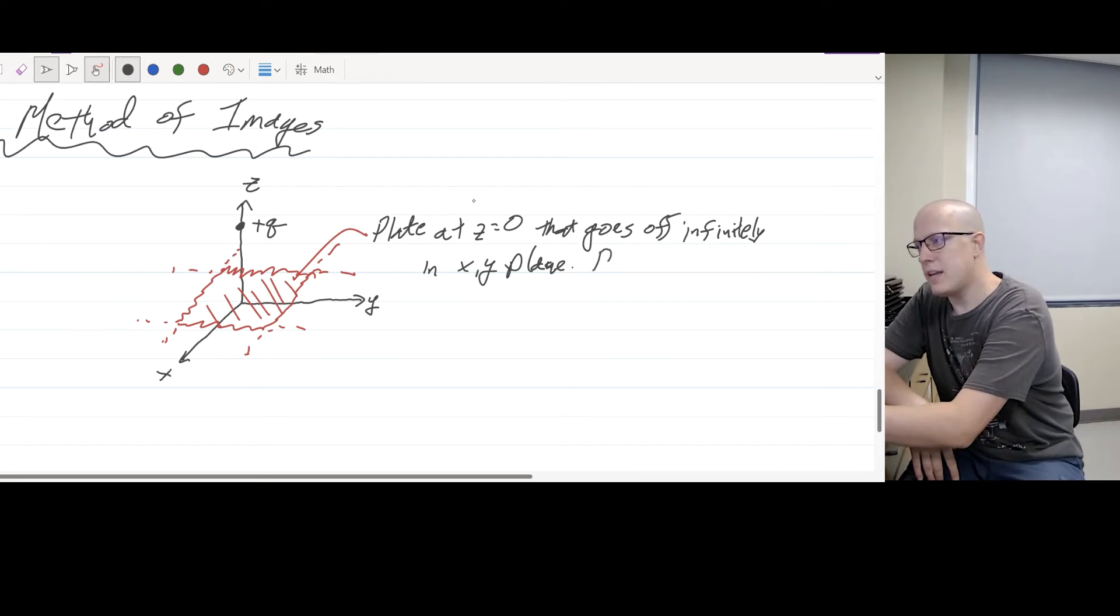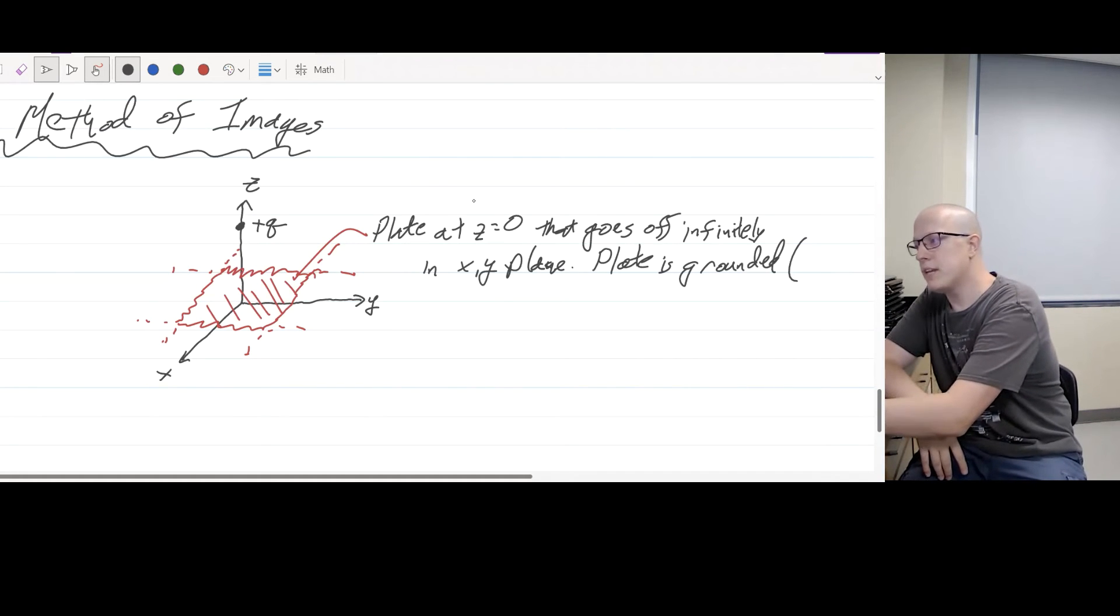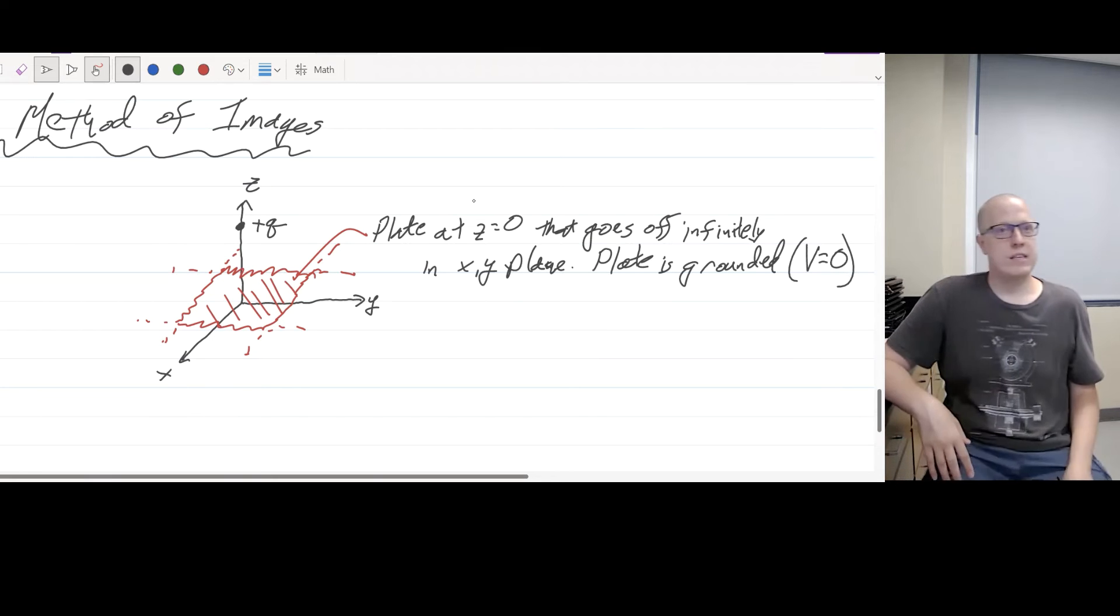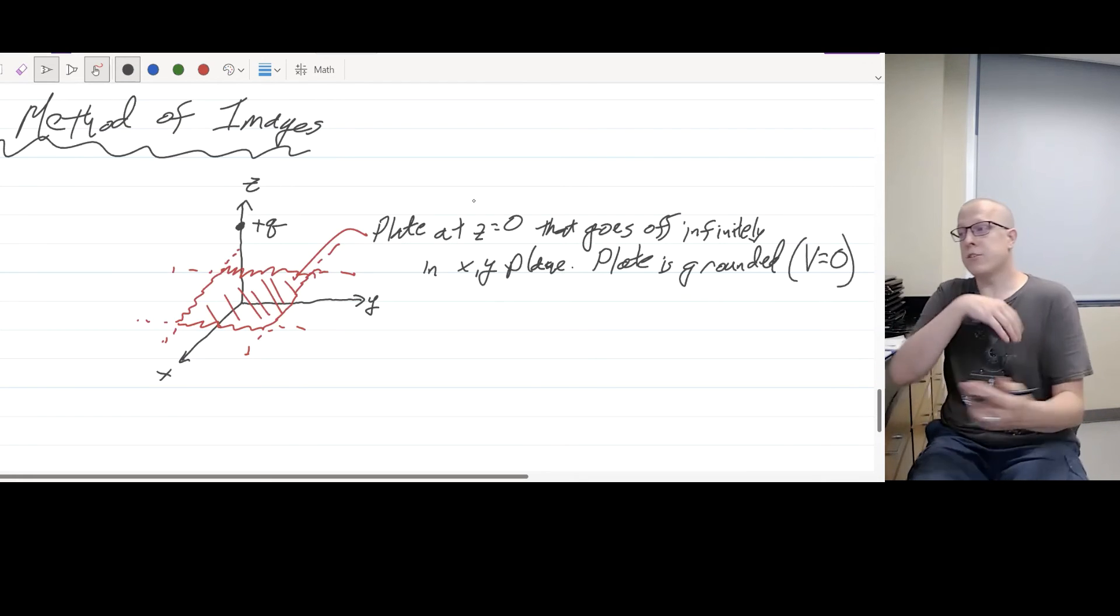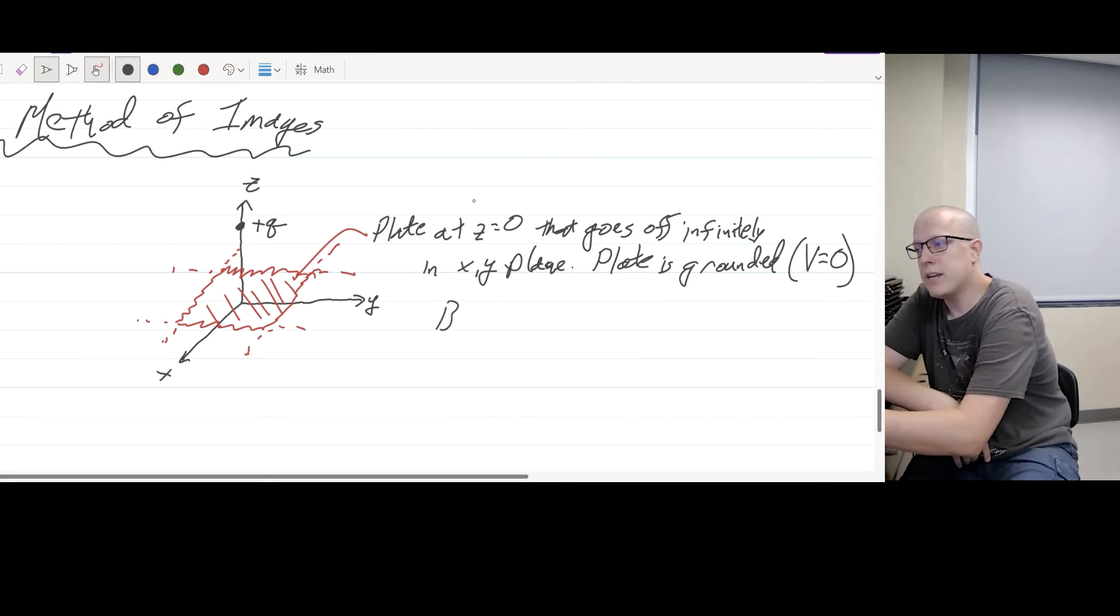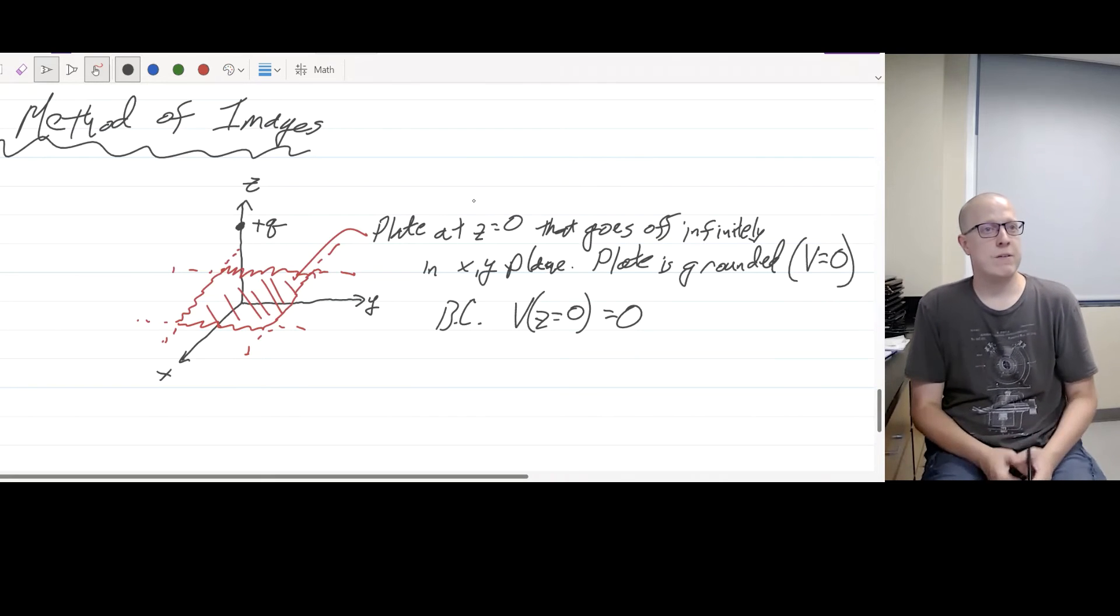And this plate is grounded. And if the plate is grounded, by definition, grounding something means that you are forcing the potential to be zero at that point. And so what this is telling you is that this is a boundary condition. That says that V at Z is equal to zero is equal to zero. So this is the boundary condition that we have here.